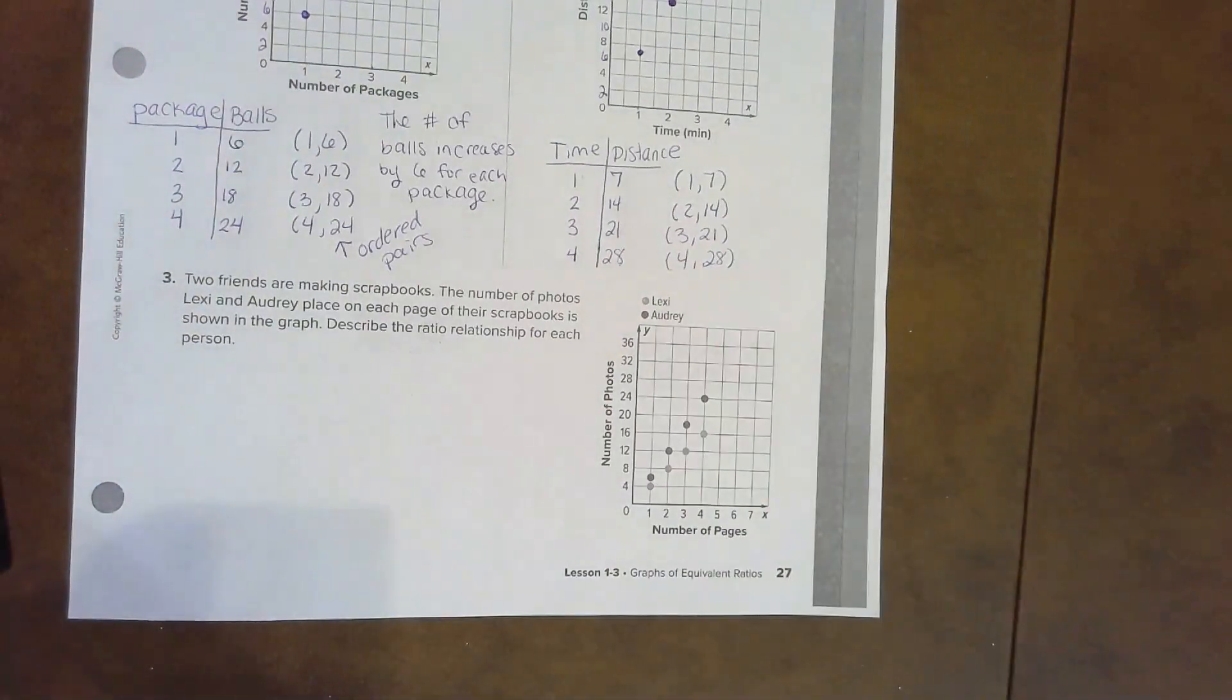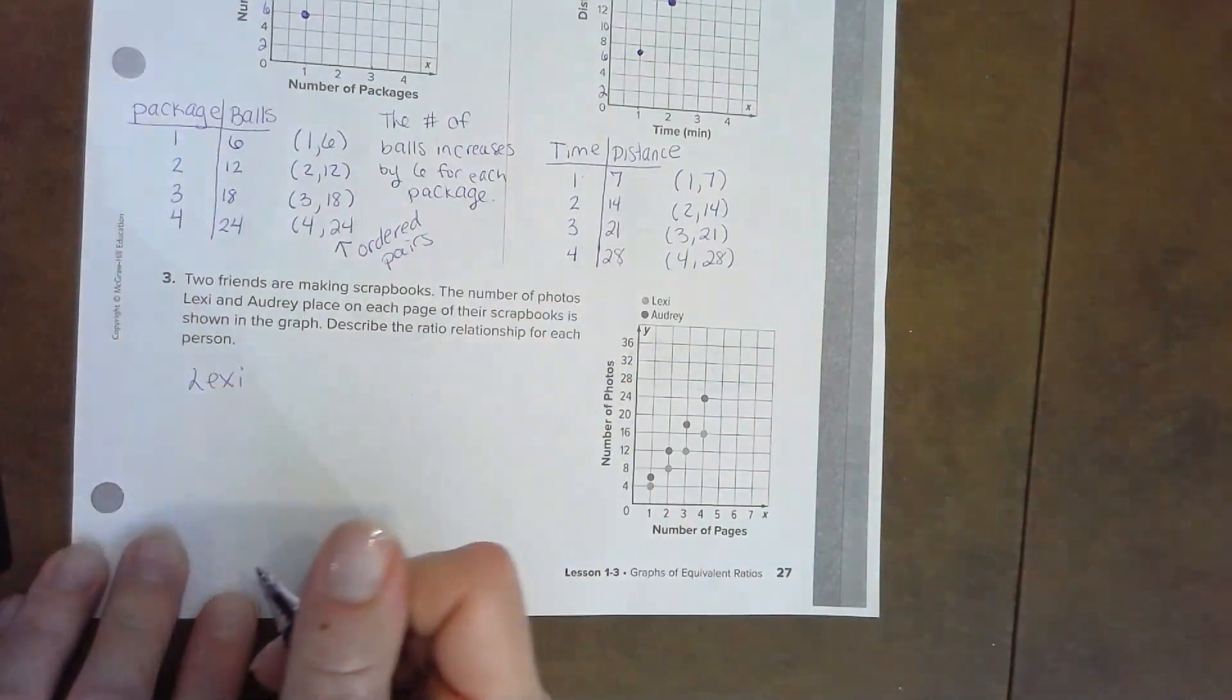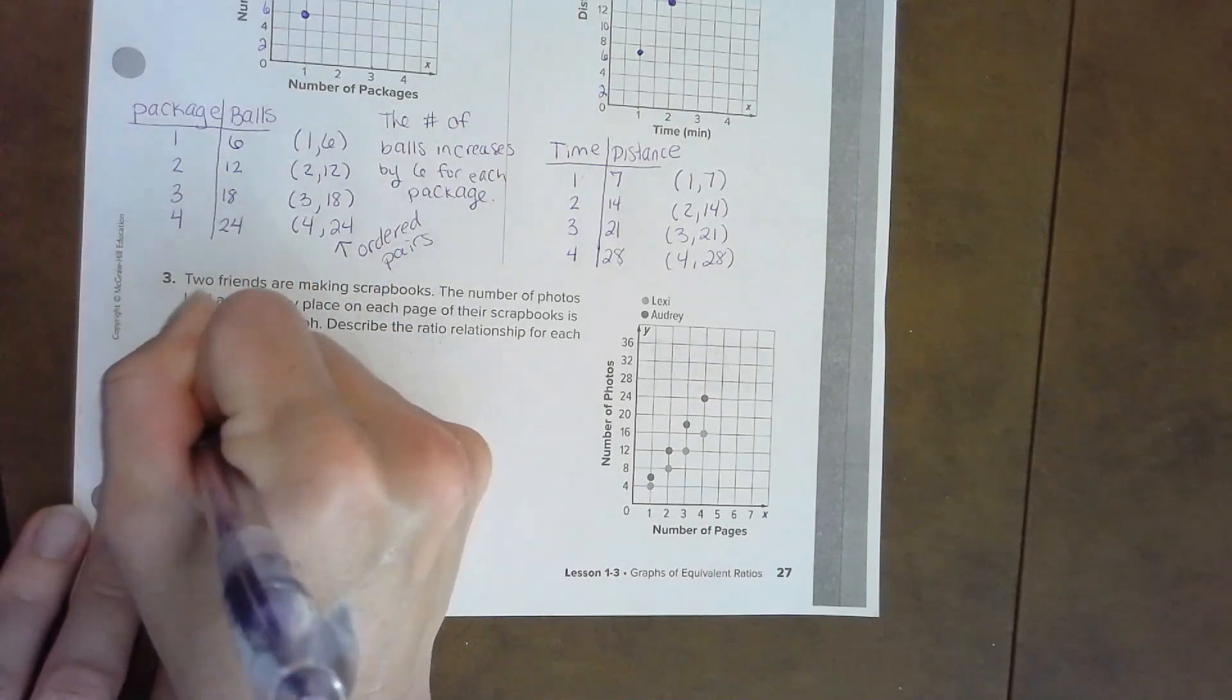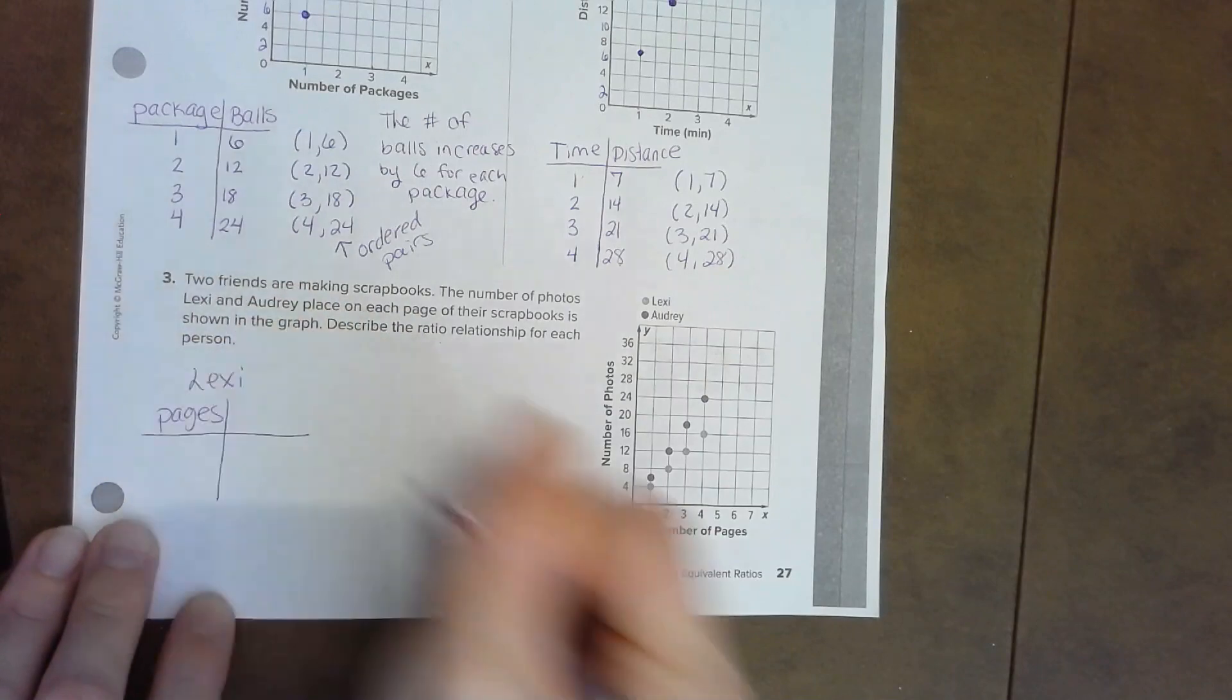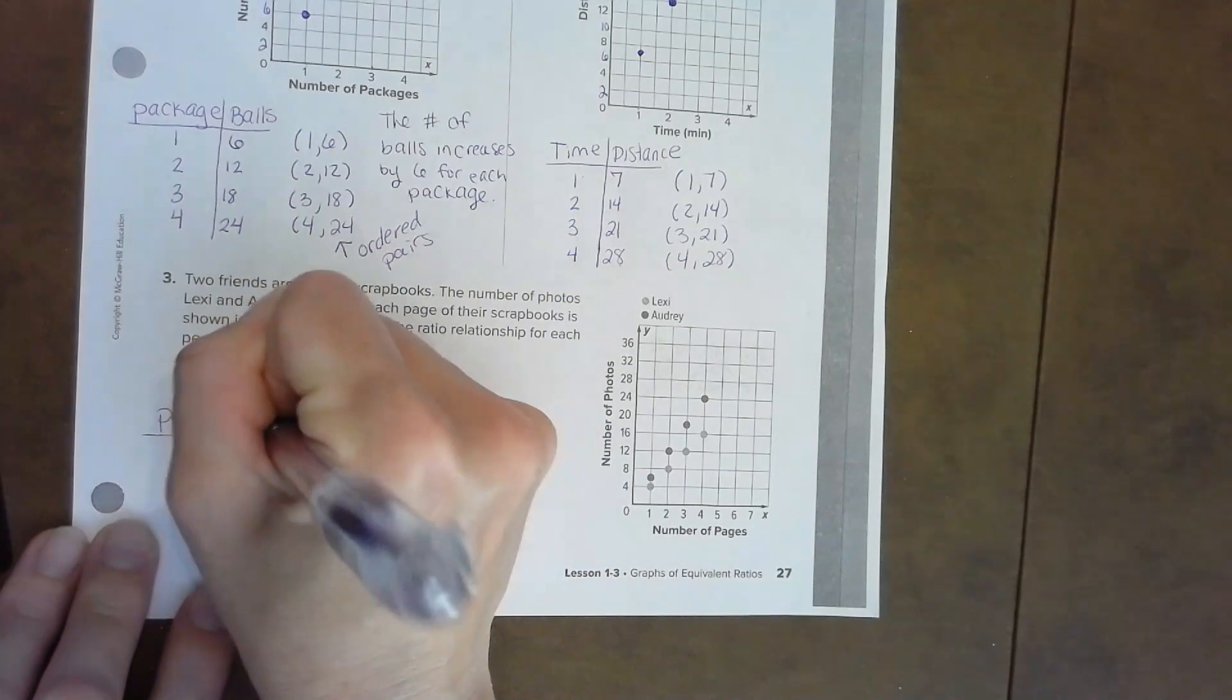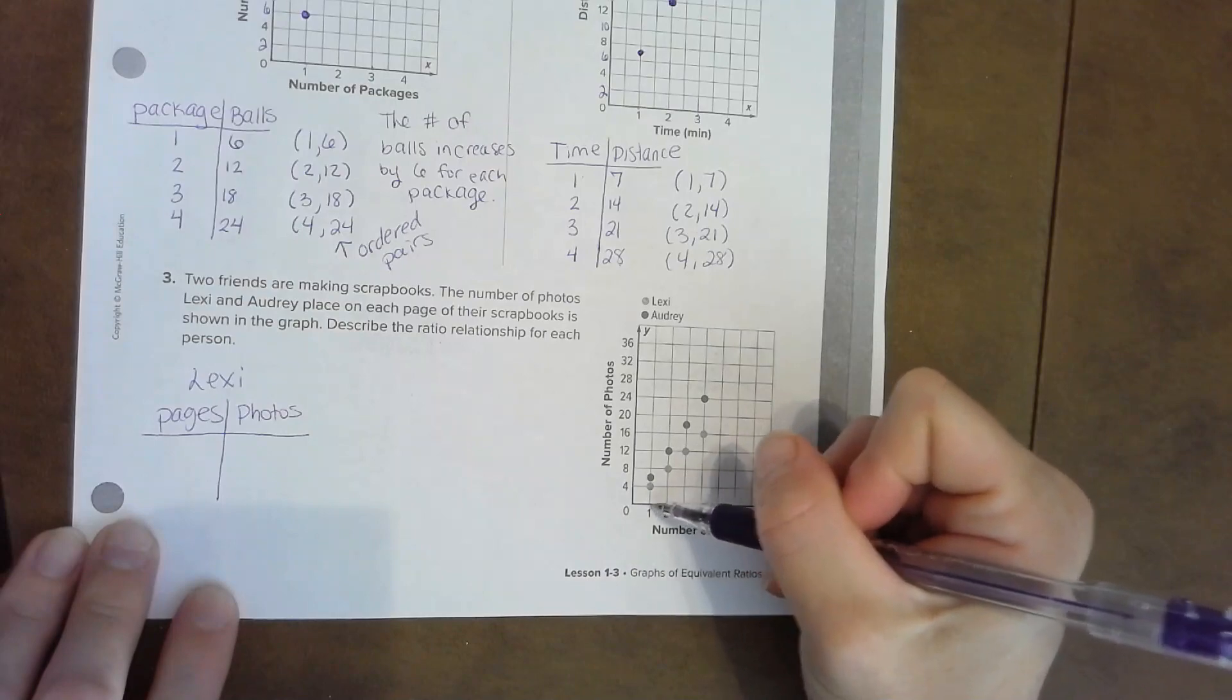Number three. Two friends are making scrapbooks. The number of photos Lexi and Audrey place on each page of their scrapbook is shown in the graph. Describe the ratio relationship for each person. So we're going to look at Lexi and Audrey. I'm going to write Lexi's name, and we are comparing the pages and pictures—pages and I think they call them photos.